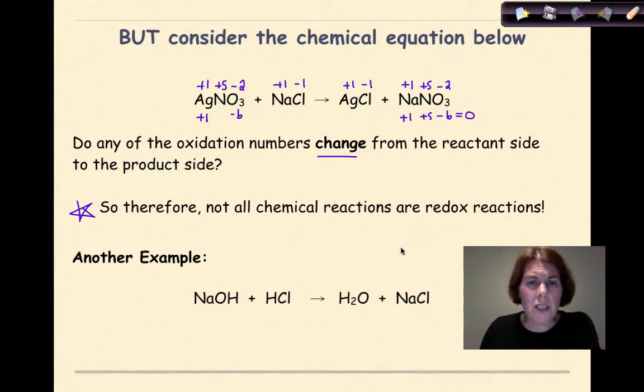Let's look at one more example. Sodium hydroxide plus hydrochloric acid yields water and sodium chloride. Again, I'm going to start out by assigning oxidation numbers. Sodium is plus one. Oxygen is minus two. Hydrogen is plus one. Electrically neutral. Hydrogen is plus one. Chlorine is minus one. Electrically neutral. Hydrogen is plus one. One times two gives me plus two. Oxygen is minus two. Minus two. That equals zero. Na is plus one. Chlorine is minus one. And again, that is electrically neutral.